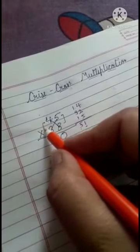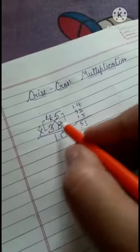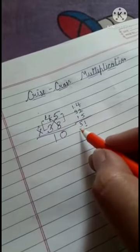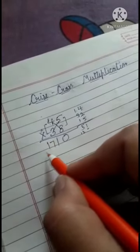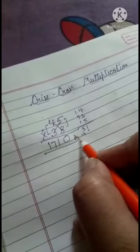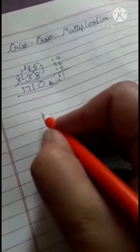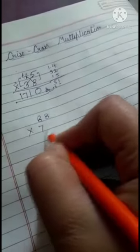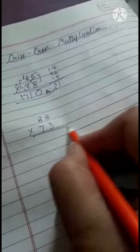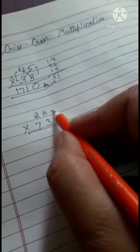After that, multiply these side numbers. 4 times 3 is 12, plus 5 is 17. So 17 will be the answer. Okay, let's see one more question: 88 multiply by 73. First, what we have to do is multiply these numbers.